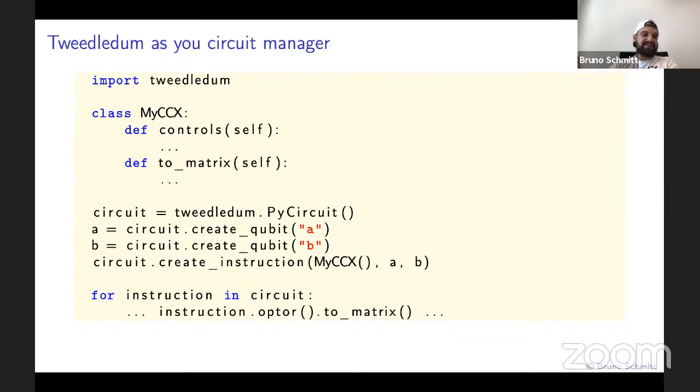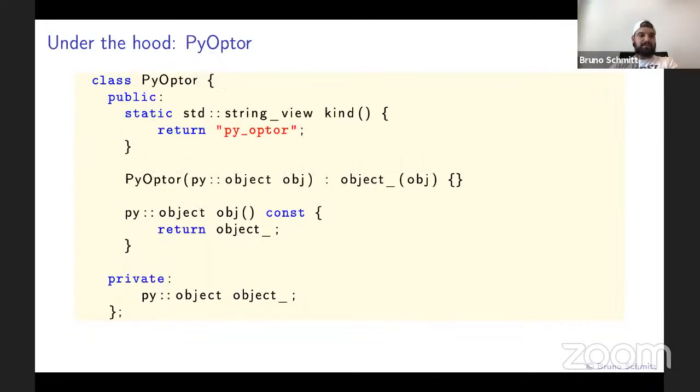How is this implemented under the hood? I basically just define a Python operator operator that takes the Python object and saves it. The rest of the functionality, how to create qubits, etc., is just binding Python to the Tweedledum C++ classes for circuit and instructions. I use pybind11 to do these bindings.